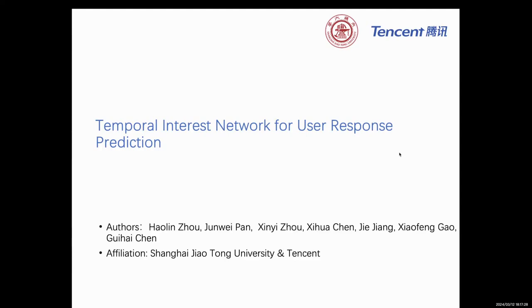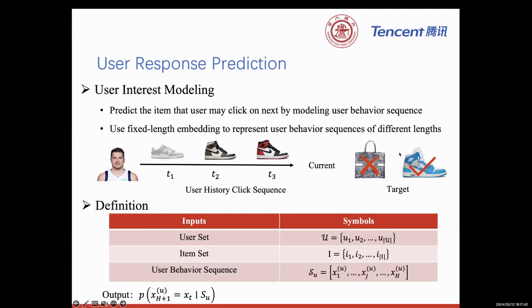Hi, everyone. This video is to present our paper, Temporal Interest Network for User Response Prediction. This is a joint work of Tencent and Shanghai Jiao Tong University. We aim to predict a user's response, such as click or not, on a target item based on her history behaviors.